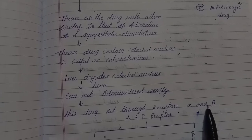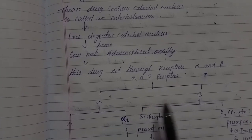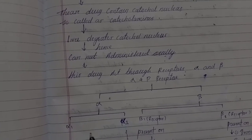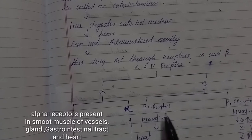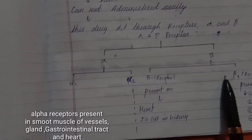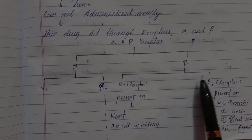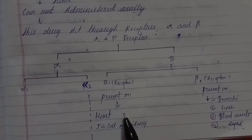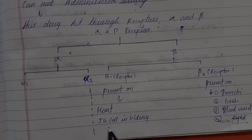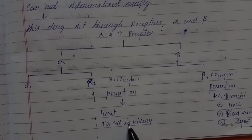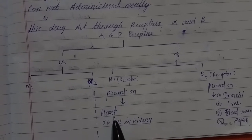Alpha receptors are divided into two subtypes: alpha-1 and alpha-2 receptors. Beta receptors are also divided into two subtypes: beta-1 and beta-2 receptors. Beta-1 receptors are present on the heart and juxtaglomerular cells in the kidney.